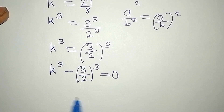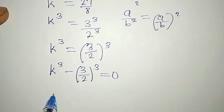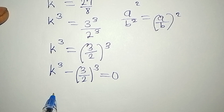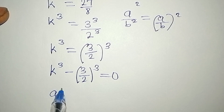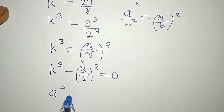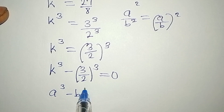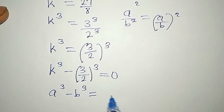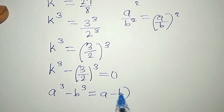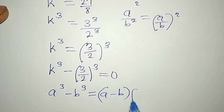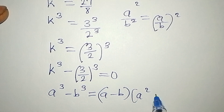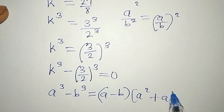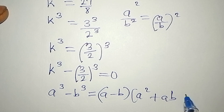Remember this as well: if you have a³ minus b³, it is the same thing as (a − b)(a² + ab + b²).